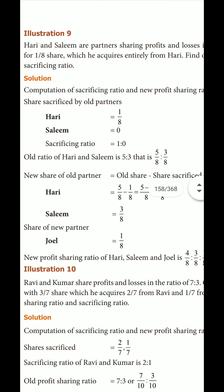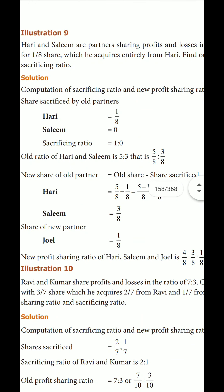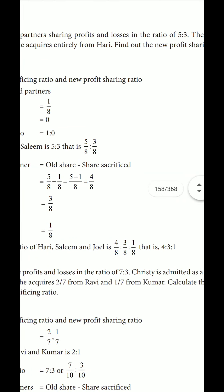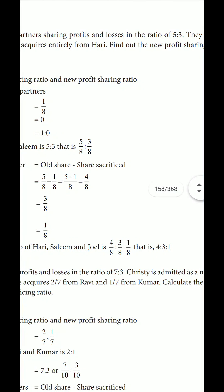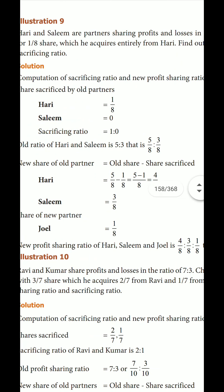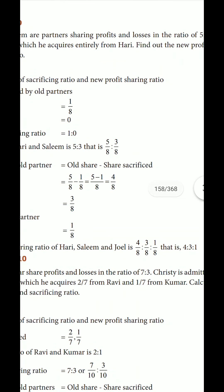The old ratio of Hari and Salim is 5:3, which is the old ratio. That is, 5 plus 3 equals 8. So Hari's old share is 5/8 and Salim's old share is 3/8.